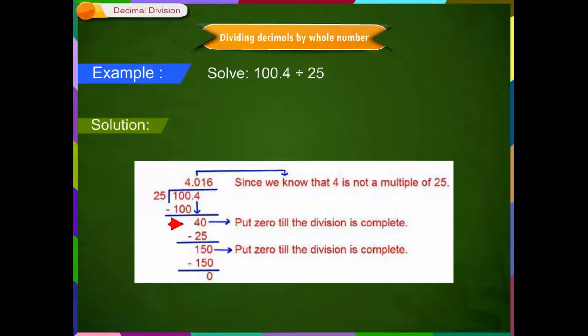Step 3: Put 0 till the division is complete. 40 divided by 25 gives quotient as 1 and 15 as remainder. Step 4: Add a 0 to 15 and make it 150. 150 divided by 25 gives 6 as quotient and 0 as remainder. Step 5: The quotient is 4.016 and remainder is 0.